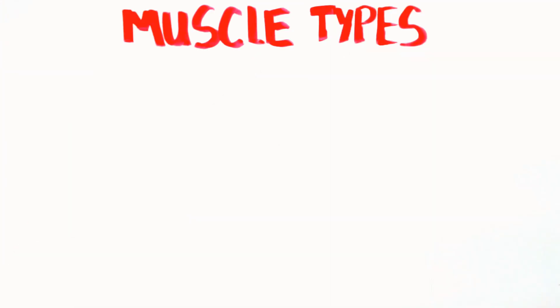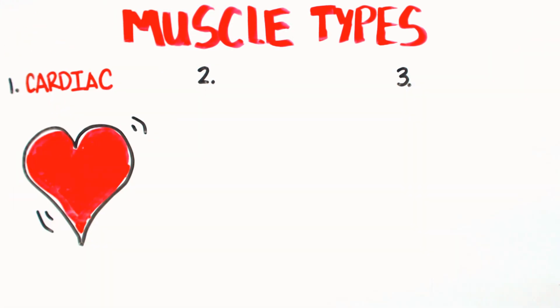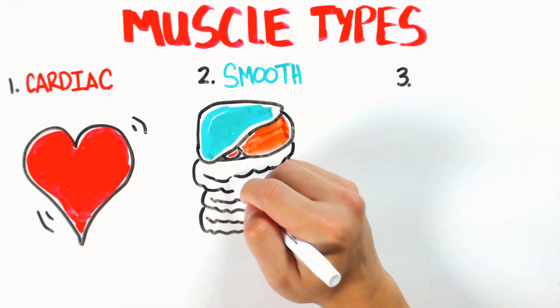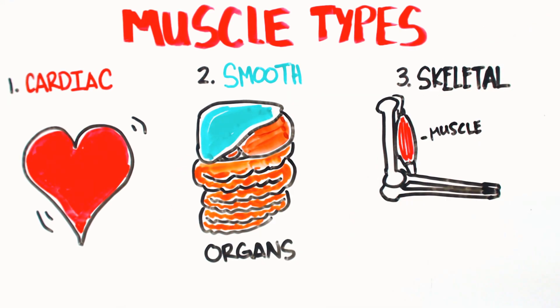The muscular system consists of three major muscle types. Cardiac muscles, which are responsible for the function of your heart. Smooth muscles, which are responsible for the function of all your other organs. And skeletal muscles, which are responsible for, as the name suggests, the movement of your bones.